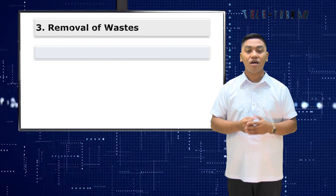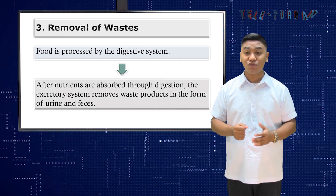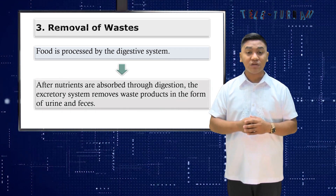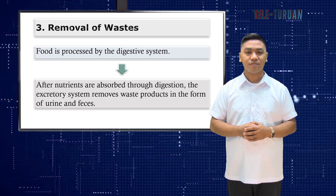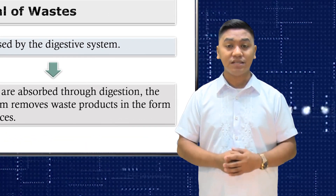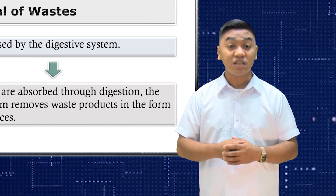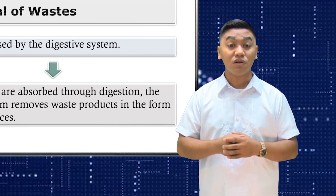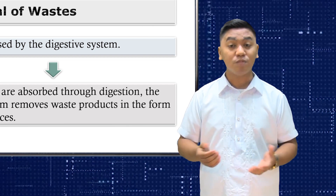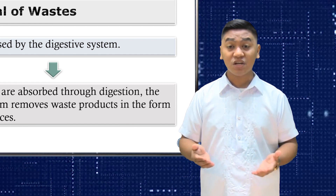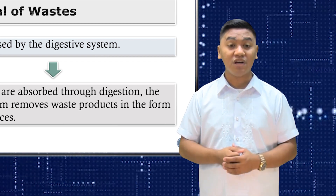Third is the removal of waste. Food is processed by the digestive system. After nutrients are absorbed through digestion, the excretory system removes waste products in the form of urine and feces. The organs of the excretory system are also parts of other organ systems. For example, skin is a part of the integumentary system, but it is also part of the excretory system because it removes liquid waste in the form of sweat. Similarly, the lungs are part of the respiratory system and they remove carbon dioxide from the body, so they are also part of the excretory system.